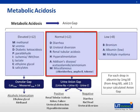DURHAM is the mnemonic that helps us remember the causes of normal anion gap metabolic acidosis. Among these, the most common are diarrhea and renal tubular acidosis. To differentiate among these, we measure the urine anion gap — the difference between the most common urine cations, which are sodium and potassium, and the most abundant anion, which is chloride.